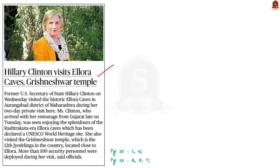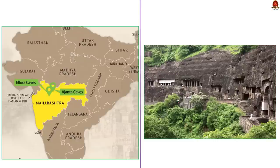Take a look at this snippet here. It says that former US Secretary of State Hillary Clinton visited the historic Ellora Caves, which is located in the state of Maharashtra. In this context, let us learn about Ajanta and Ellora Caves from a prelims perspective. Both the caves of Ajanta and Ellora are located in the Aurangabad district of Maharashtra. Even though both are in the same district, the distance between them is 100 kilometers.